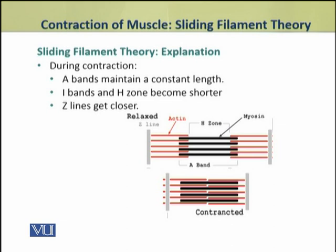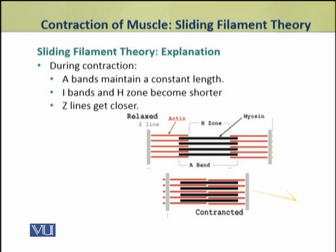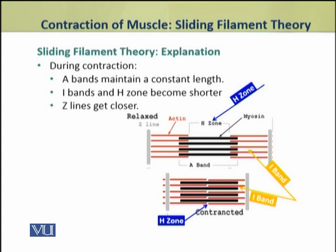During contraction, the A band maintains a constant length — it does not move and its overall length remains constant. However, during contraction, the I band and H zone become shorter because the thin filaments slide past into the region of the A band. The H zone becomes smaller because thin actin fibers now enter the region that previously contained only myosin fibers.